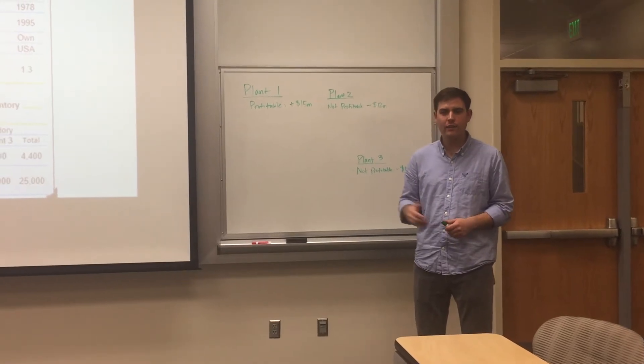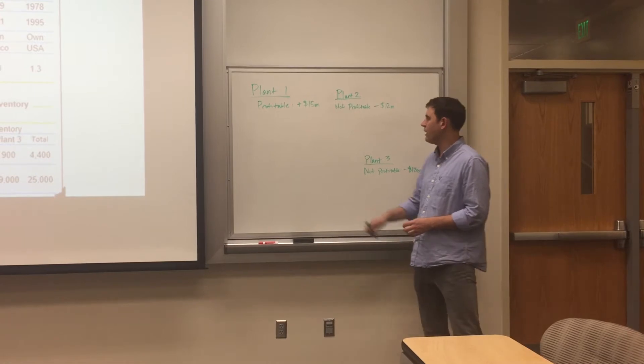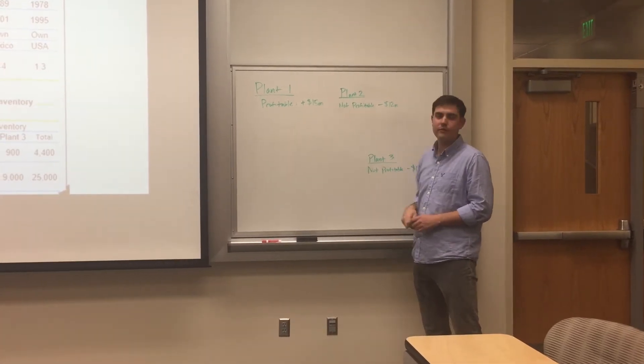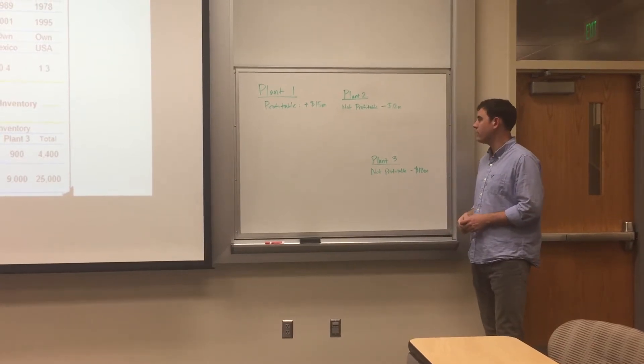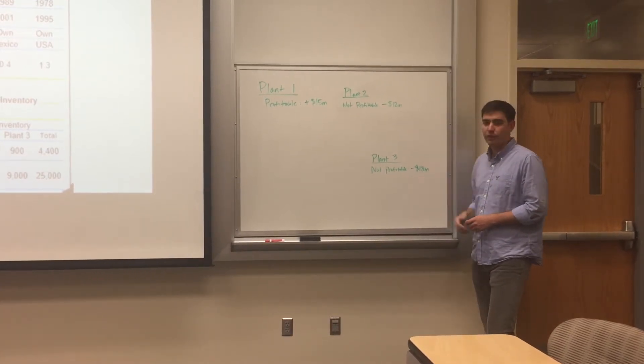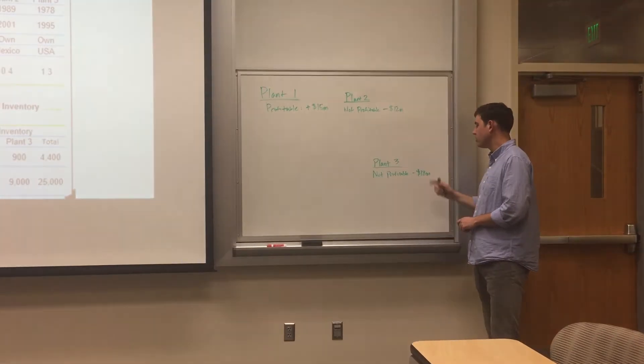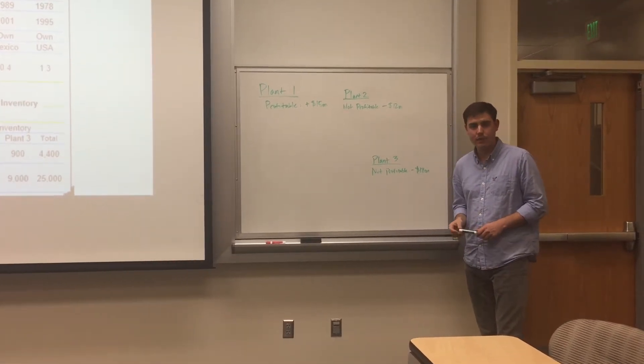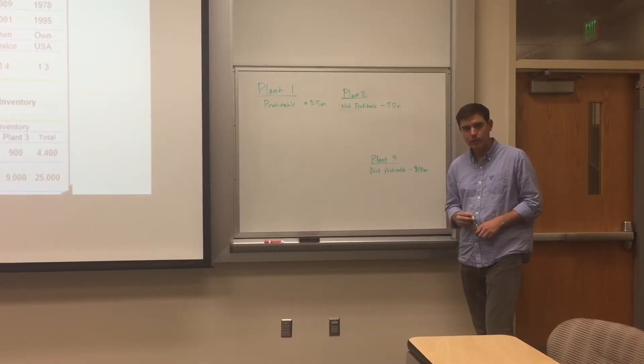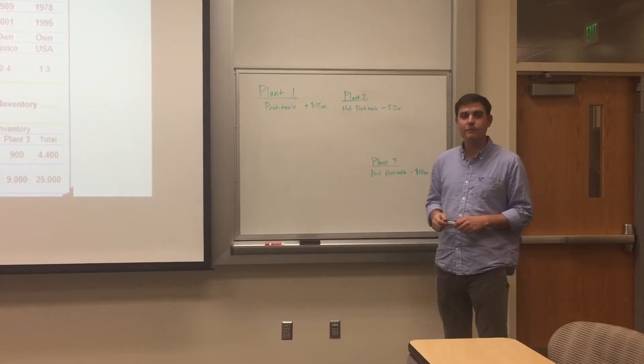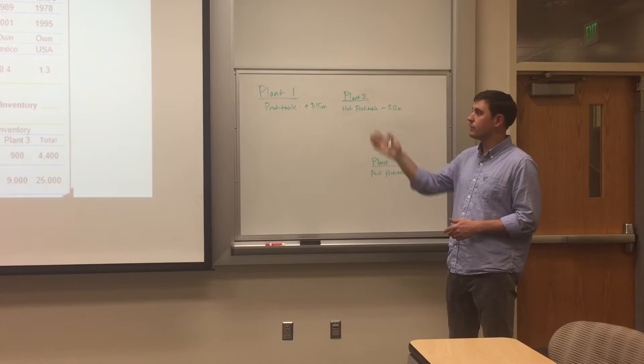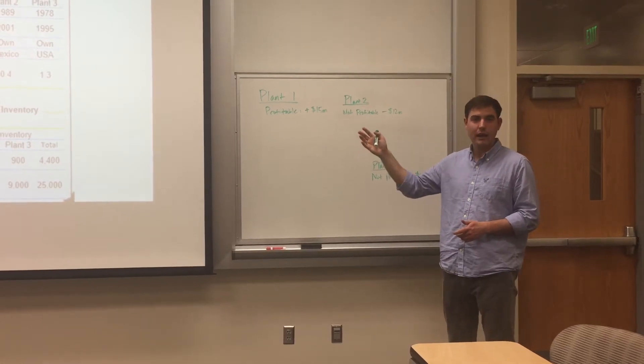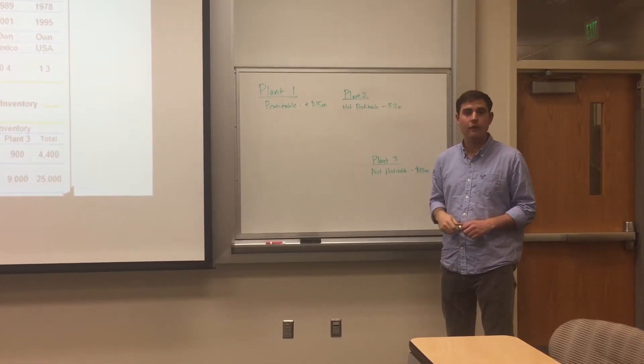Now I'm going to follow an identical process for the remaining plants two and three. After finishing our calculations, I found that plant one is profitable, making $15 million of profit per year. Plant number two is not profitable, losing $12 million per year. And plant three is not profitable either, losing approximately $18 million per year. Now I would ask the interviewer to give me some time to analyze what the options are for each plant and to look at the rest of our exhibit and to determine what the implications are of each option.